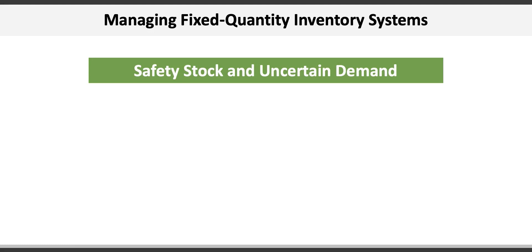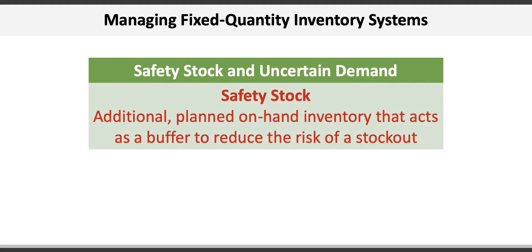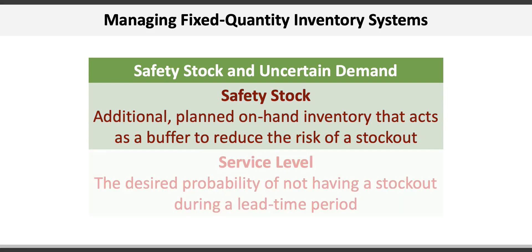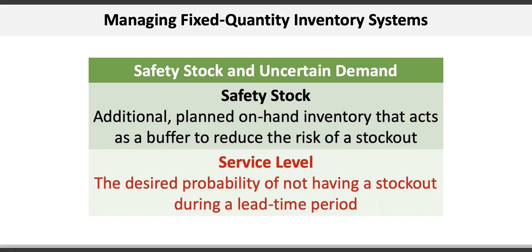As seen in the variable demand illustration, stockouts happen often. One way companies plan to avoid stockouts is by carrying additional safety stock — planned on-hand inventory that acts as a buffer to reduce the risk of stockout. The amount of safety stock to hold can be determined based on the desired service level, which is the desired probability of not having a stockout during the lead time period. The higher the service level, the more safety stock a business will carry.